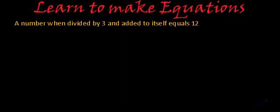So what is the variable? Variable is a number. So if we assume that number to be x, so they are saying a number when divided by 3, so when this number is divided by 3 and added to itself, added to the number itself, number is x equals 12. This is what the statement is saying and we have found this equation in mathematical notations.